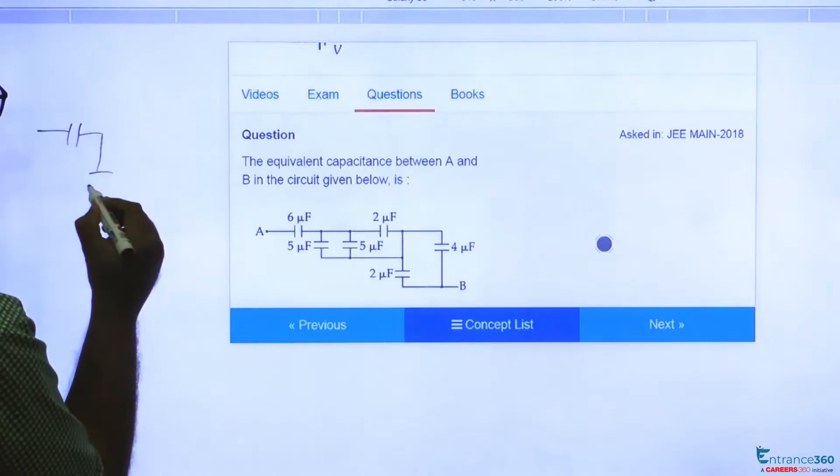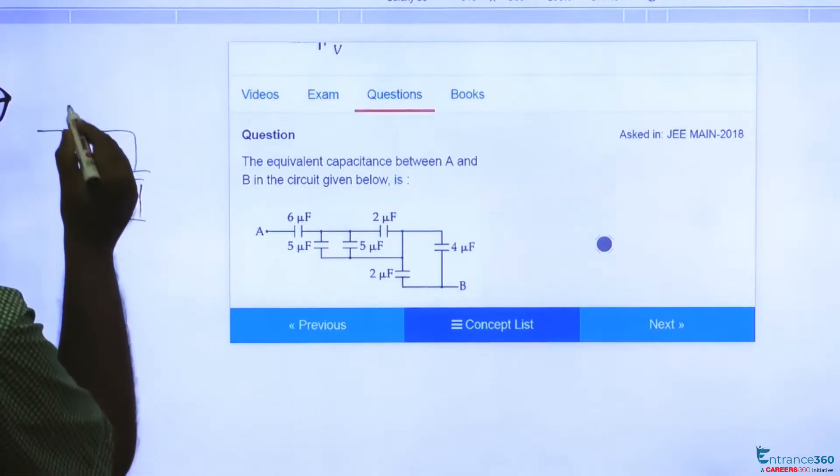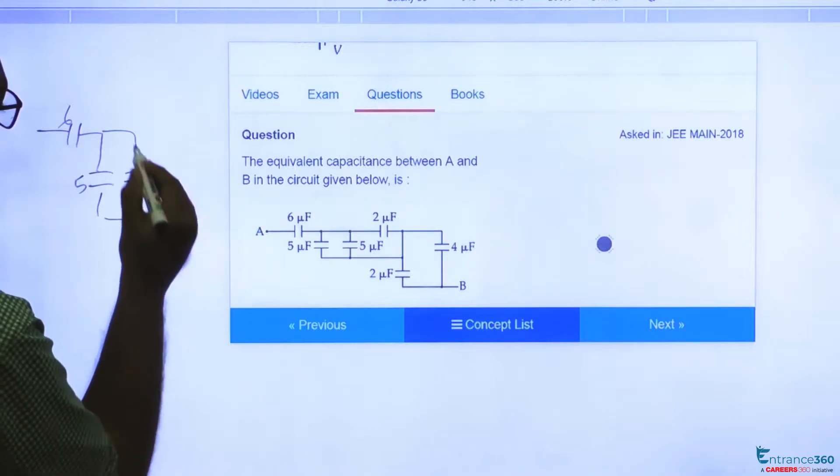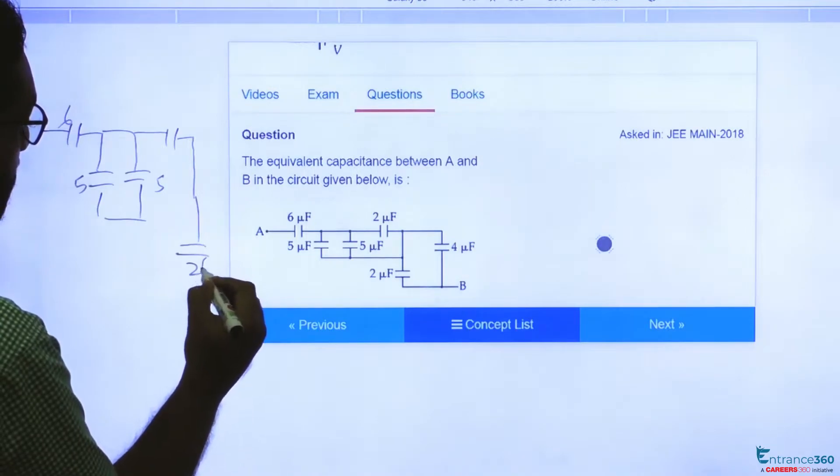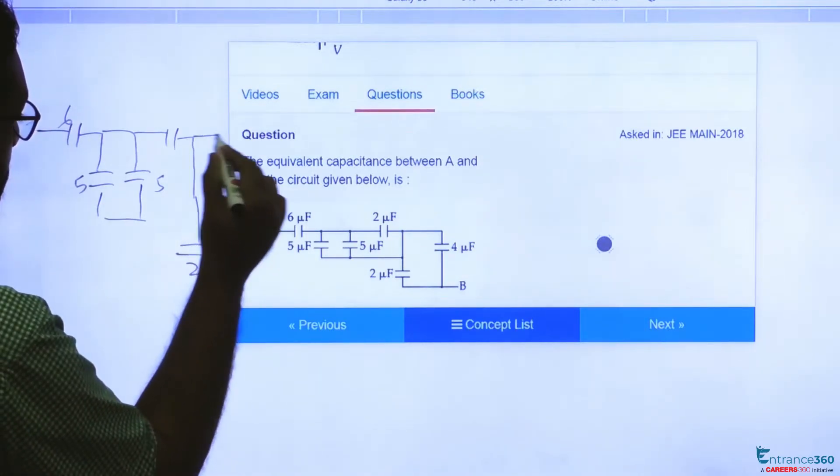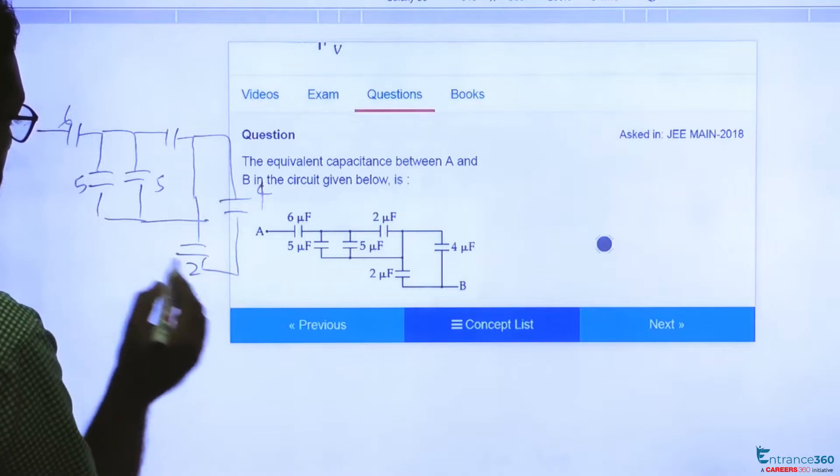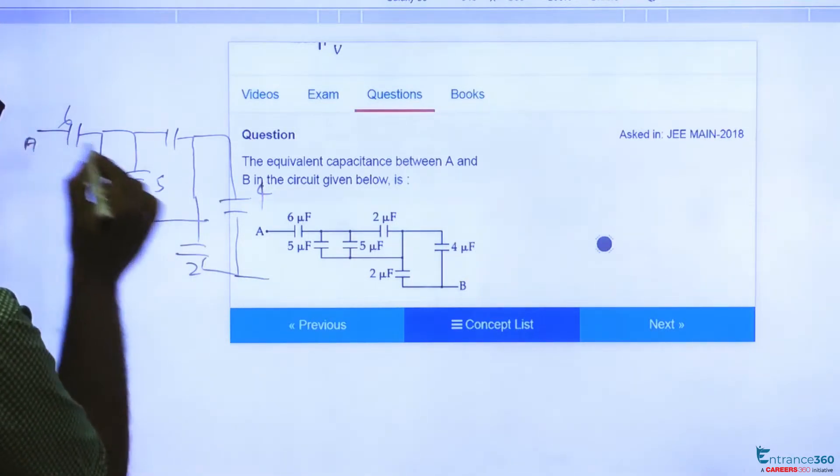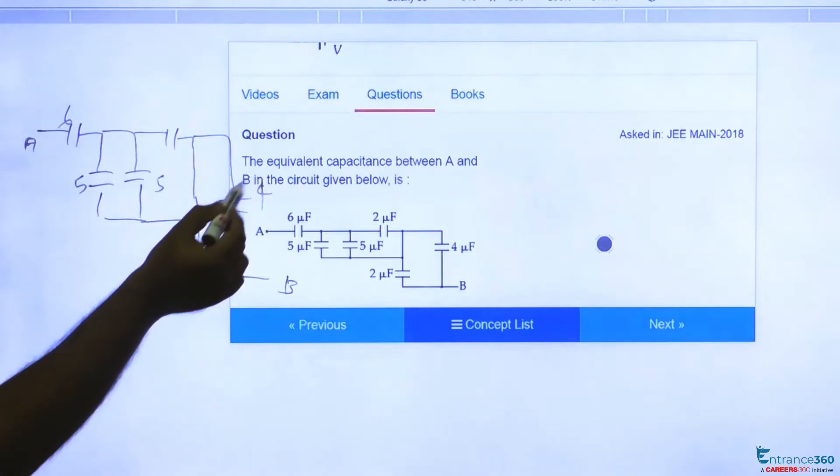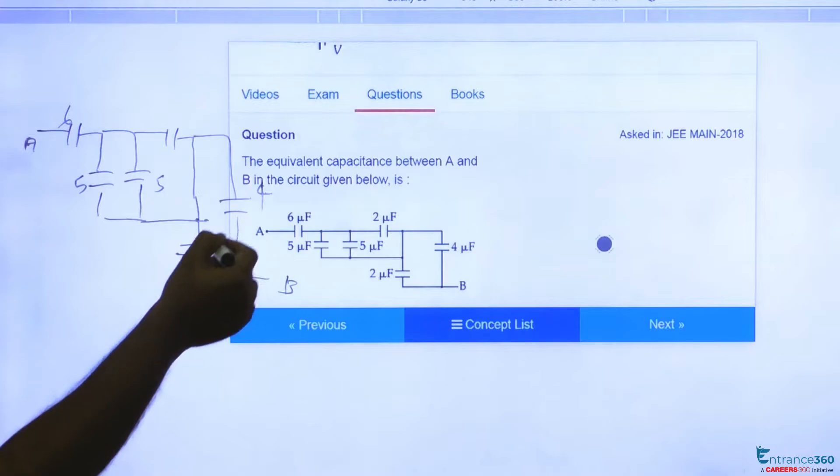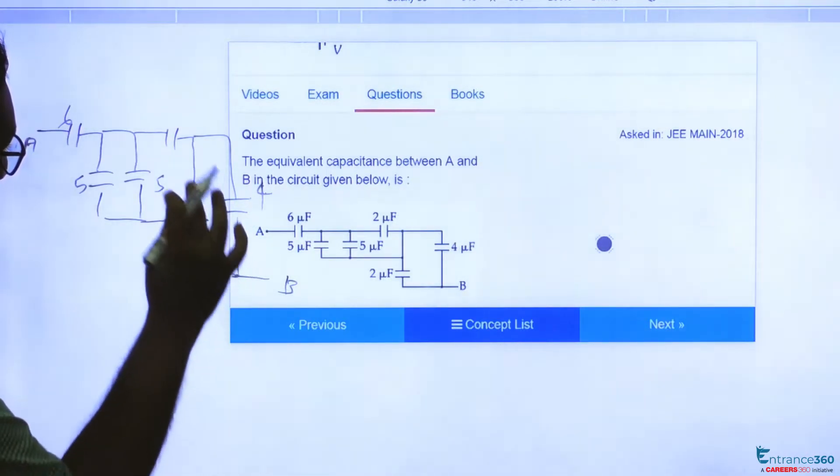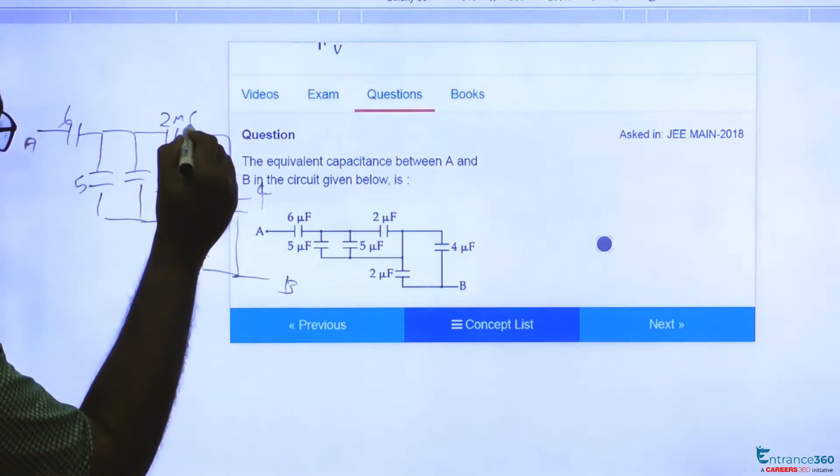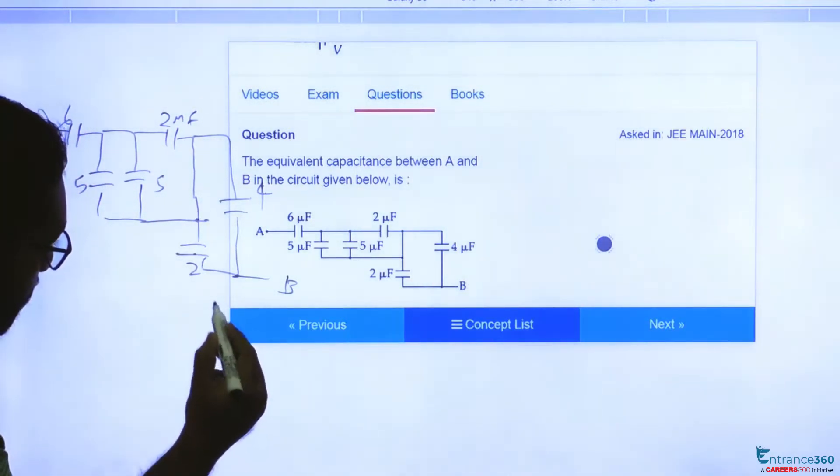5 microfarad, 5 microfarad, 6, 5, 5, 2, 2, and 4. A is this point, B. See, these are connected in parallel. These both ends are joined together, so 2 and 4 are in parallel. So we have 2 microfarad. Okay, so 2 and 4 are in parallel.